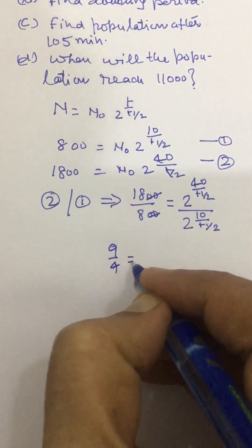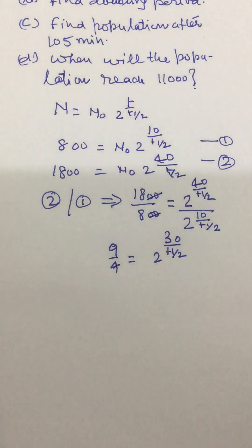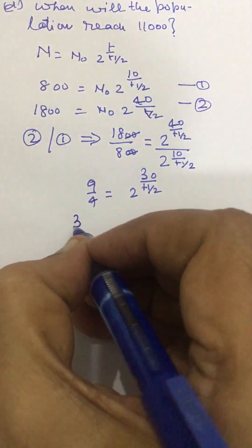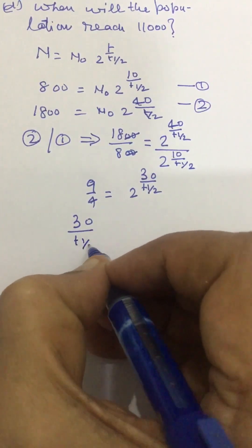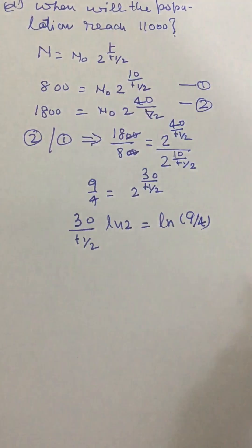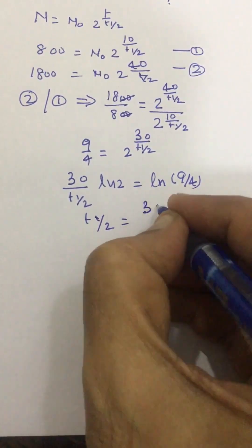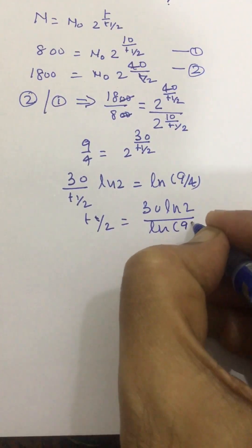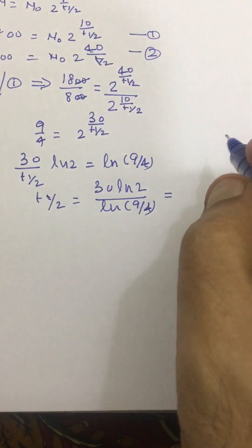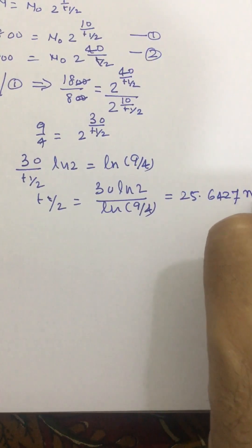This simplifies to 9 by 4 equal to 2 raised to the power (40 minus 10) over t-half, that is 30 over t-half. Taking log on both sides, we get 30 divided by t-half times log 2 equal to log(9/4). Then t-half will be given by 30 times log 2 divided by log(9/4), and solving this we get 25.6427 minutes.